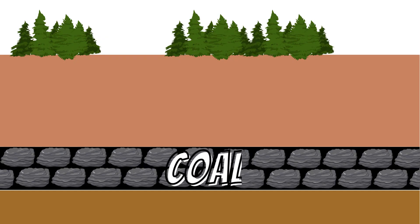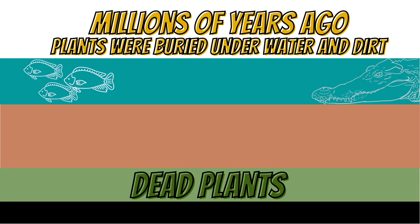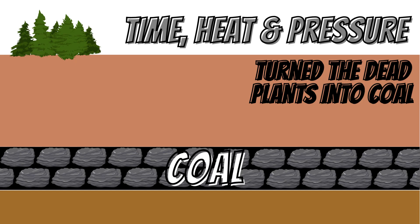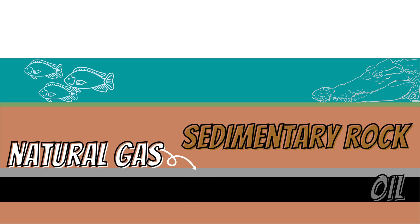Coal is usually found within sedimentary rock deposits, where rock, dead plant and animal matter are stacked up in layers. Oil is primarily found as a solid material situated between these layers of sedimentary rock. Natural gas is typically found in the pockets above the oil deposits.